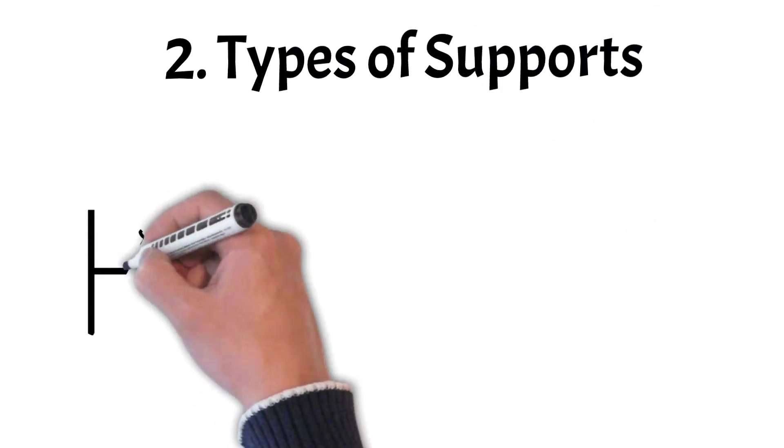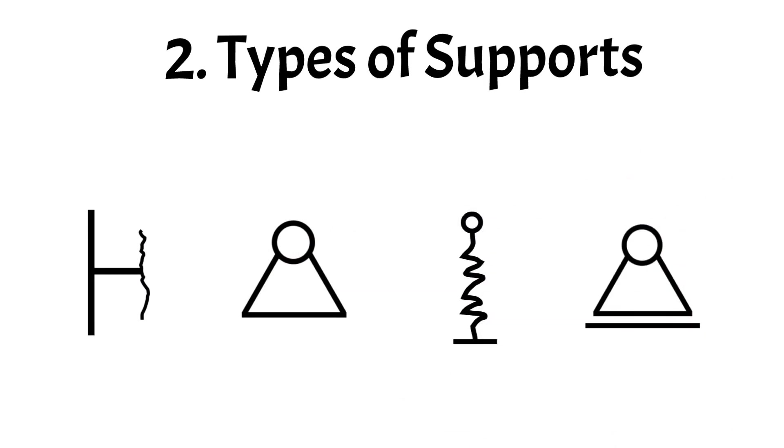Alright, so now let's have a look at the different types of supports and their characteristics. Every structure requires different supports, as the choice of support has a big influence on the behavior of the structure. Due to support, a structure can be restrained, flexible or rigid. Not only because of the support, but it does have a big influence.